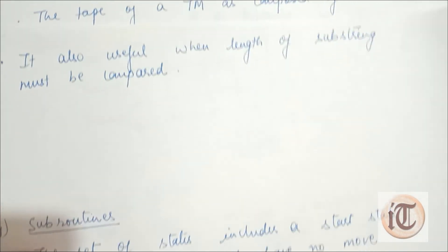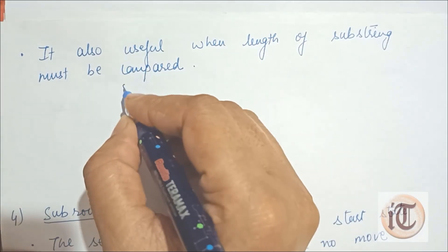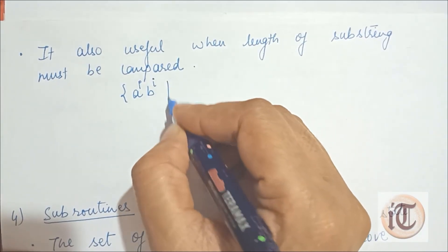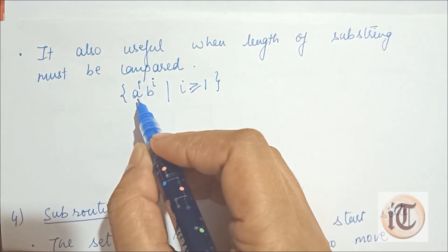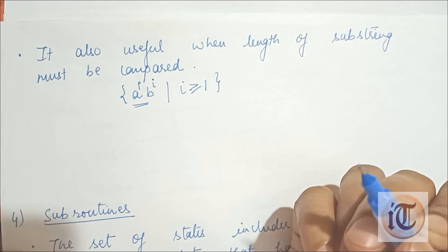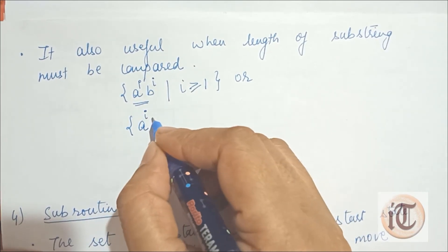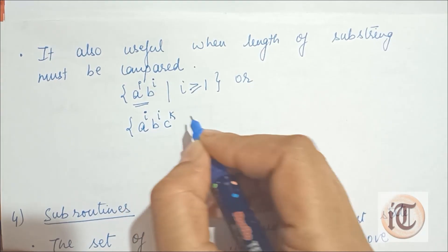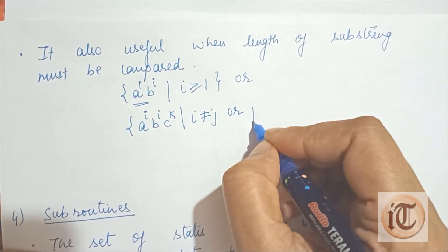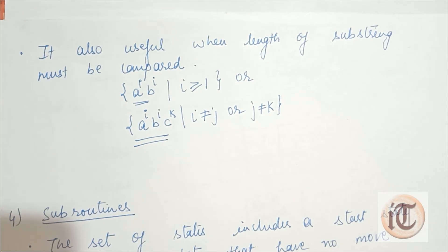Checking of symbols is also useful when the length of subscripts must be compared. For example, if we have a language a^i b^i where i ≥ 1, we need to compare that the number of a's equals the number of b's. Another example is a^i b^j c^k where i ≠ j or j ≠ k. In these types of languages, the length of subscripts must be compared, so we use the technique called checking of symbols.